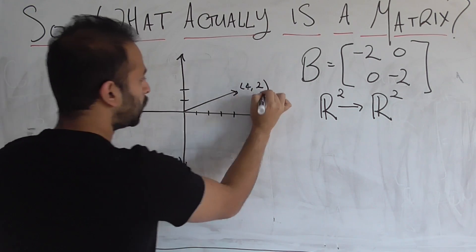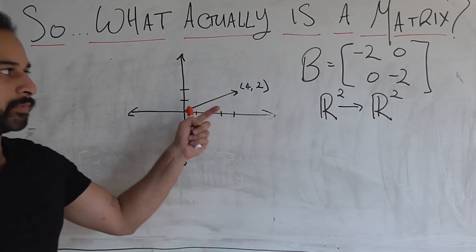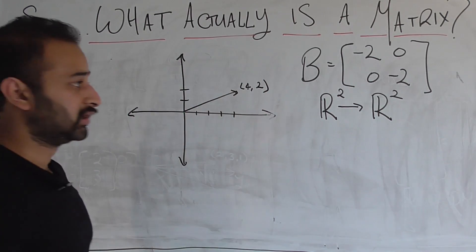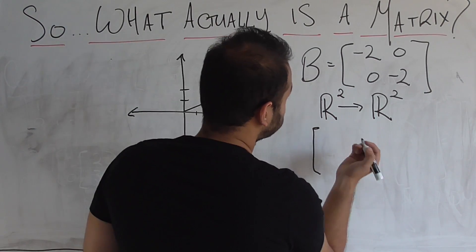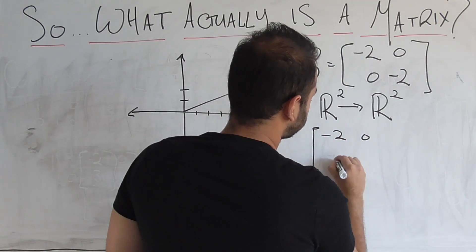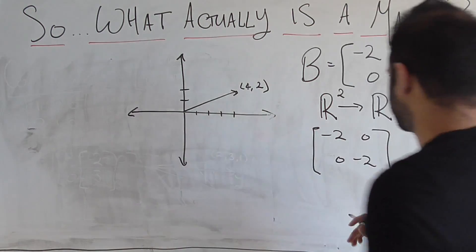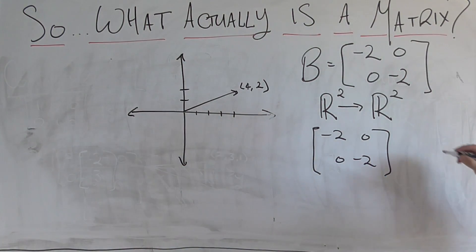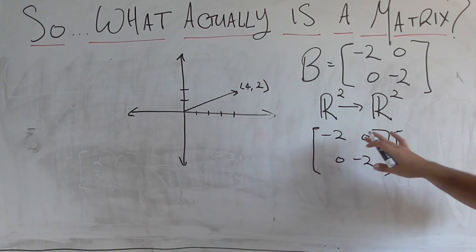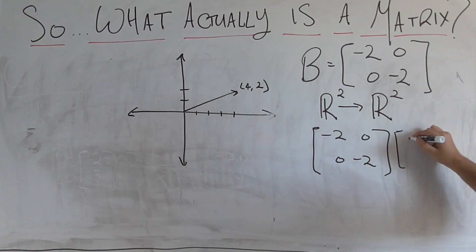What happens to four comma two when we run it through this linear transformation, B? Remember, that's done by executing a matrix vector multiplication. So we have negative two, zero, zero, negative two. And we run through four and two. And what do we get back?